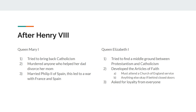Next up is Queen Elizabeth I, and she's going to take a more pragmatic approach. She's going to find a middle ground between Protestantism and Catholicism. She develops the Articles of Faith. In the Articles of Faith, to simplify, Queen Elizabeth says: you have to attend a Church of England service, but whatever you do behind closed doors is your business. As long as on the outside you look like a member of the Church of England, she doesn't care what you do in your private life. The other thing she asks for is loyalty from everybody.